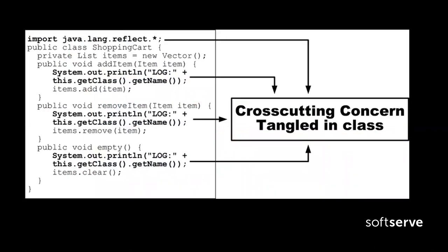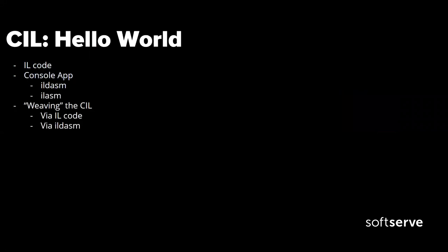It would be great if we can remove all of the logs, compile the application, open it, inject the logging, and then compile it again. We've explained how the IL code can be written for a simple console application, then we open IL ASM and disassembly to weave the CIL.